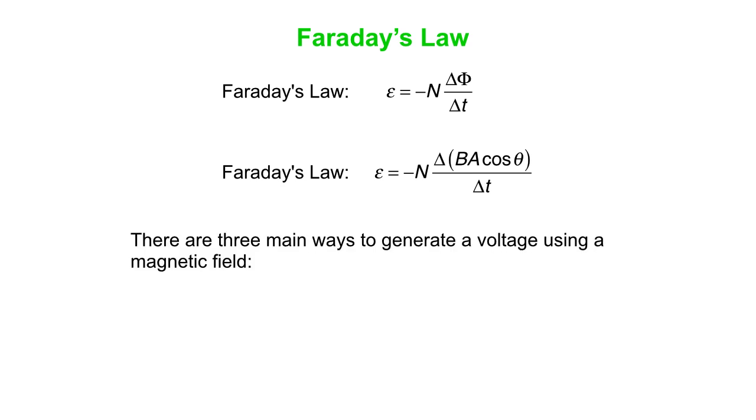Okay, so that gives us three ways to generate a voltage. So first, you can simply change the field. You can do that very easily by moving a magnet around near a coil of wire or a loop of wire.